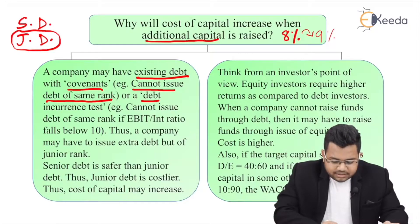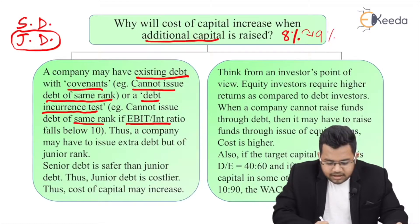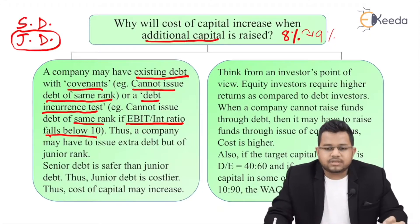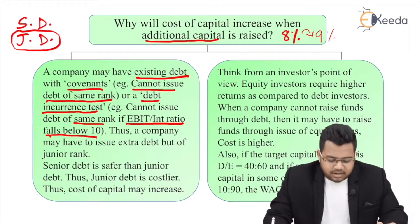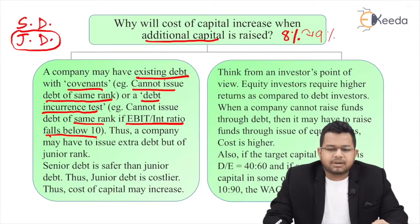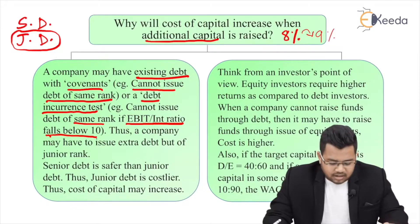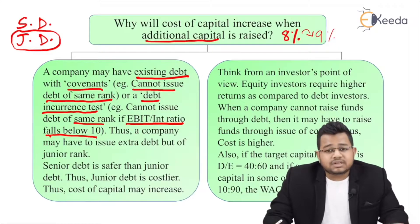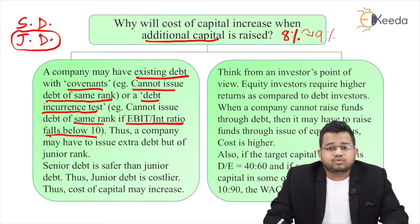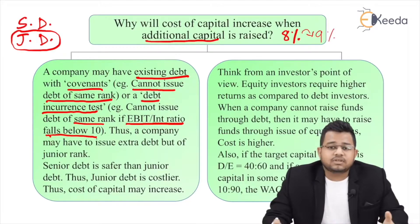There is also a debt incurrence test. For example, it cannot issue debt of the same rank if the EBIT-to-interest ratio falls below 10. This is known as the interest coverage ratio. So if you have already issued senior debt and your EBIT divided by interest ratio falls below 10, you will have to issue junior debt and not senior debt. This is why you may have to issue extra debt, but not of the same rank.